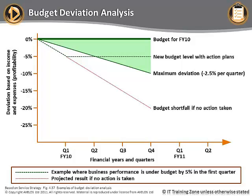We know that budgets are inaccurate, so we would not expect the budget deviation to be zero. Investigating each deviation would likely be a waste of time. In practice, we would set a threshold, and provided the deviation remained within that threshold, we would take no action.